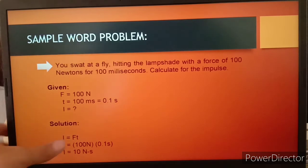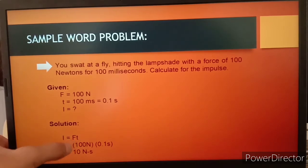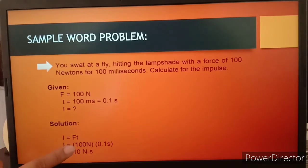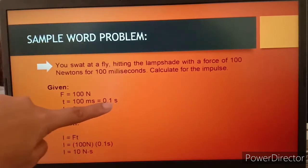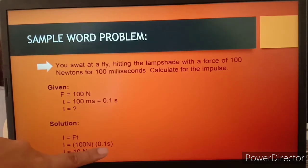We're going to use this formula: I = Ft, or force times the change in time. Then we're going to substitute the given values. For the force, we have 100 newtons, and for the time, we'll use the converted time, 0.1 second.